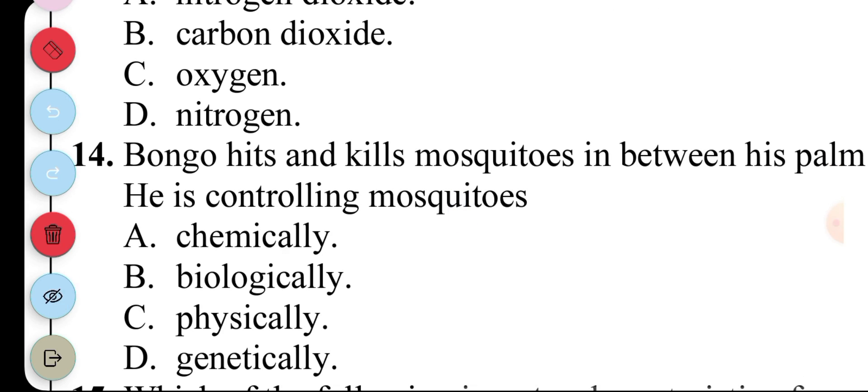Question 14. Bongo hates and kills mosquitoes. In between the sperm, is controlling mosquitoes A. Chemically, B. Biologically, C. Physically, D. Genetically. The answer to question 14 is C. Physically.